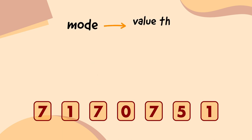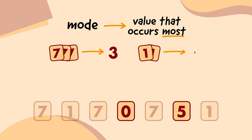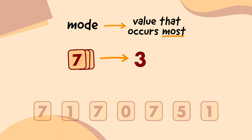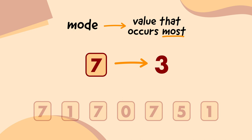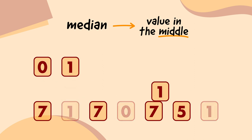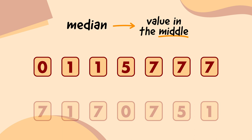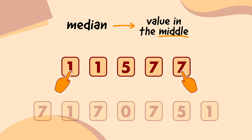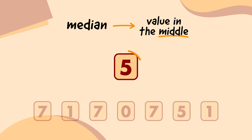Mode is the value that occurs the most. For this data set, 7 turns up 3 times, 1 turns up twice, 0 turns up once, and 5 turns up once. 7 turns up the most, so that means the mode is 7. Median is the value in the middle. To find out the median, we first have to put the data in order. Then we see which value is in the middle position of the data set. We can easily do that by counting inwards from both sides until we find the middle. That means the median here is 5.